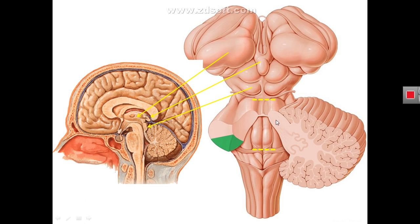The boundaries of the rhomboid fossa from above are formed by the superior cerebellar peduncles, which connect the midbrain and cerebellum. More lateral to the superior cerebellar peduncle is the middle cerebellar peduncle connecting the pons with the cerebellum, and below these is the inferior cerebellar peduncle connecting the medulla oblongata with the cerebellum. The superior cerebellar peduncles are connected by a lamina called the superior medullary velum.